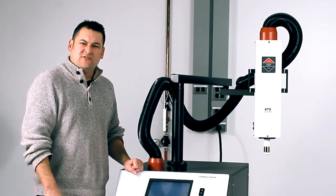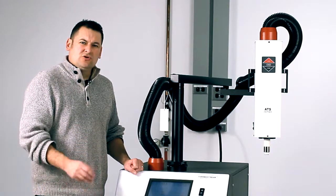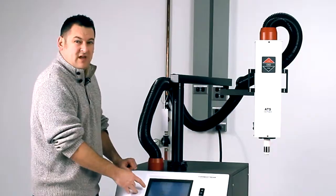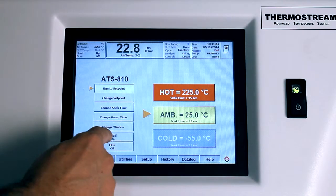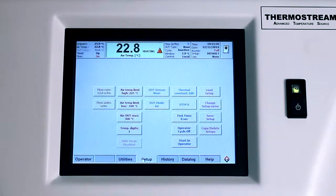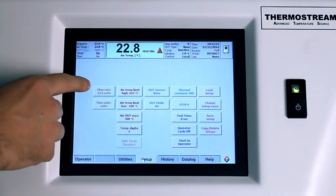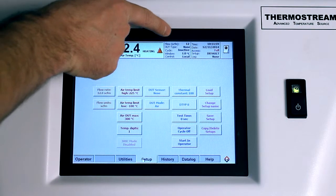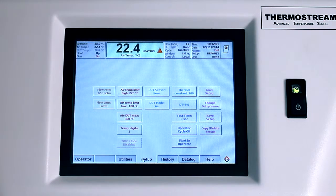Signs that you need to change the filters on your machine usually revolve around having low air flow rates. If you look on the main screen, run the ThermoStream to a temperature and then navigate to the setup screen and make sure that your flow rate settings, here set to 12 SCFM, match what your flow rate reading is in the status bar, here also 12 SCFM.